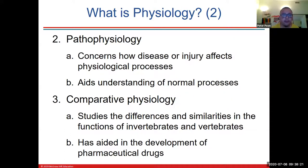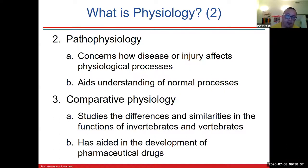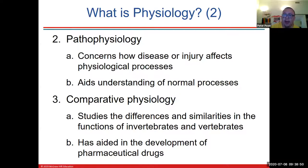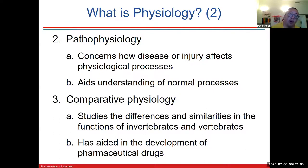Pathophys is abnormal. Comparative physiology is the comparative difference between us and other apes, or us and other mammals. It has aided the development of pharmaceutical drugs. When we first come up with a drug, we don't automatically give it to humans. We give it to different animals first, starting with worms, flies, and mice, and then eventually sometimes chimpanzees or other monkeys before giving it to humans.